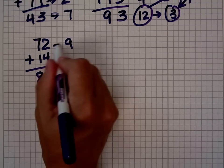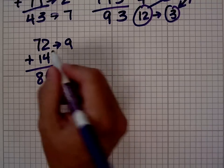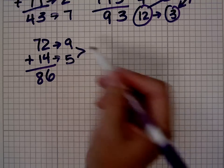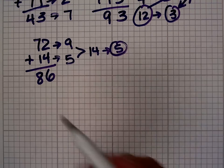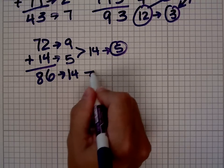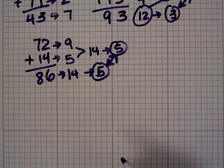The digital root of 72 is 9. No surprise there since 72 is divisible by 9. The digital root of 14 is 5. 9 plus 5 is 14, so the digital root is 5. 8 plus 6 is 14, and the digital root of 14 is also 5. Your digital roots match, and you've done the answer correctly.